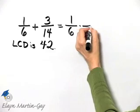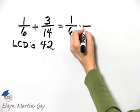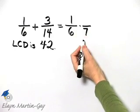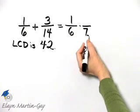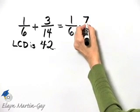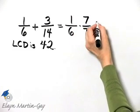So what do I multiply 6 by in order to have a product of 42? I multiply it by 7. In order for me to be multiplying by 1 then, I must multiply by 7 over 7. And I will do that in just a moment.